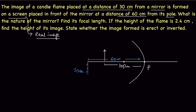According to the question and sign convention, u is equal to minus 30 centimeters and v is equal to minus 60 centimeters. Based on that, we have to find the focal length using the mirror formula.